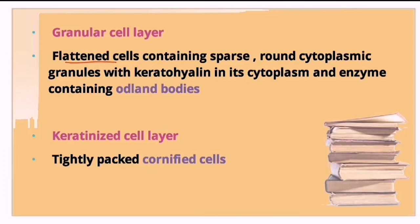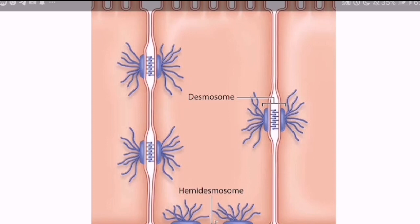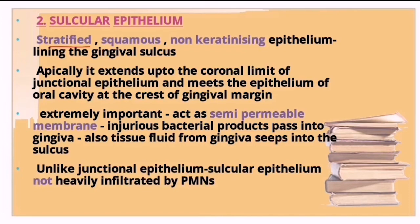The granular cell layer has flattened cells with sparse round cytoplasmic granules containing keratohyalin and enzyme-containing Odland bodies. The stratum corneum has tightly packed cornified cells. In the picture, stratum basale attaches to the basement membrane via hemidesmosomes, stratum spinosum interconnects via desmosomes, followed by stratum granulosum and stratum corneum.